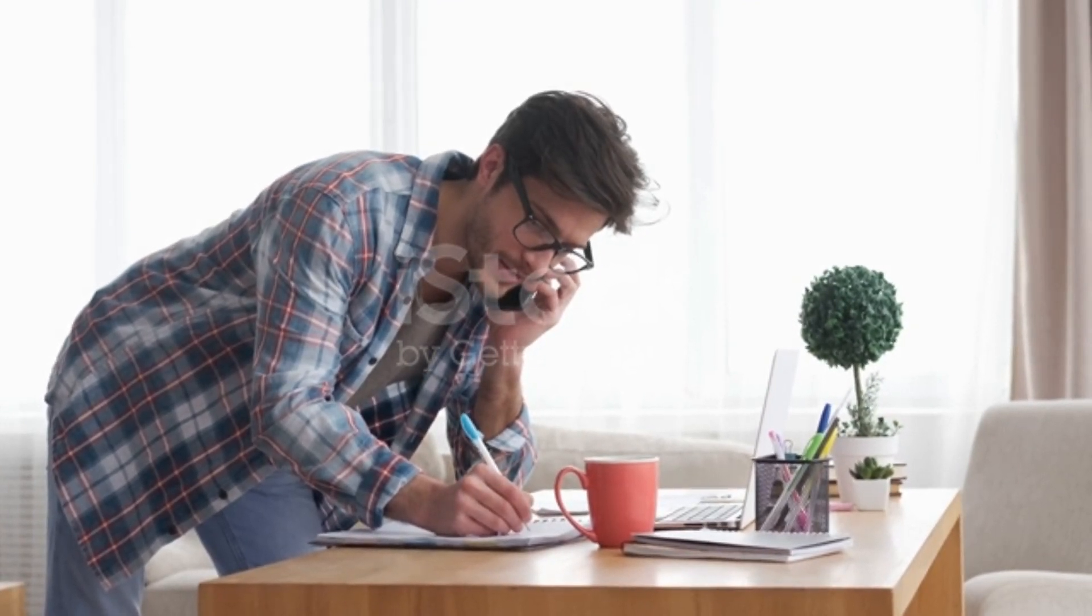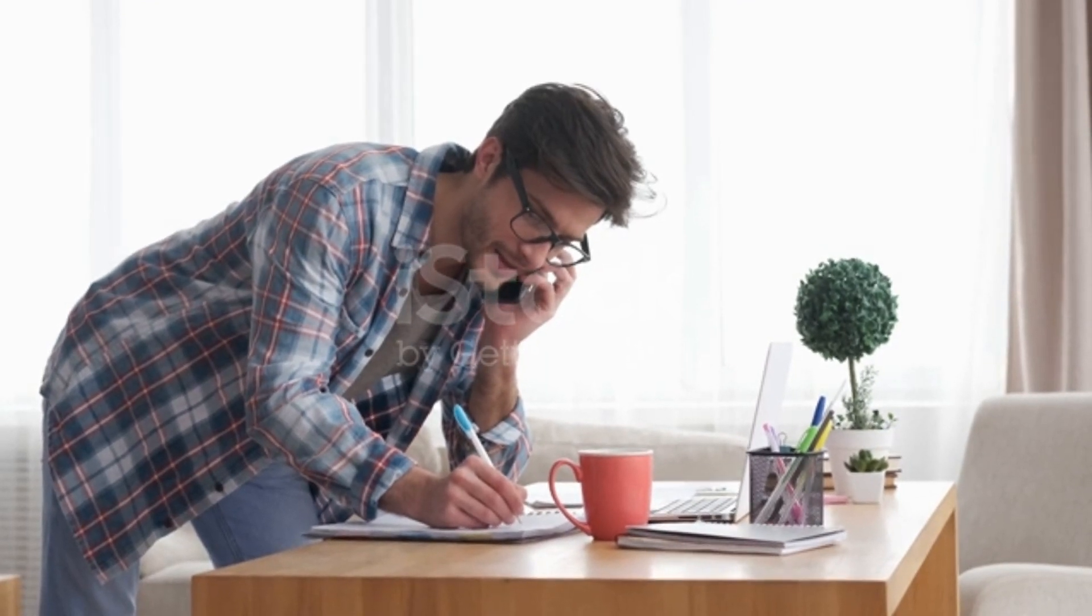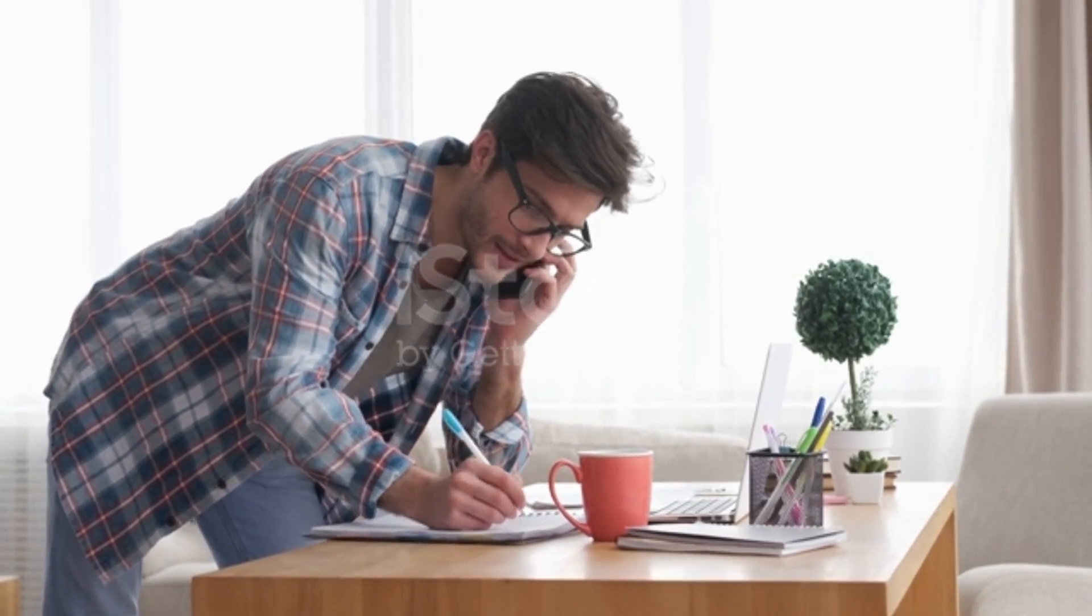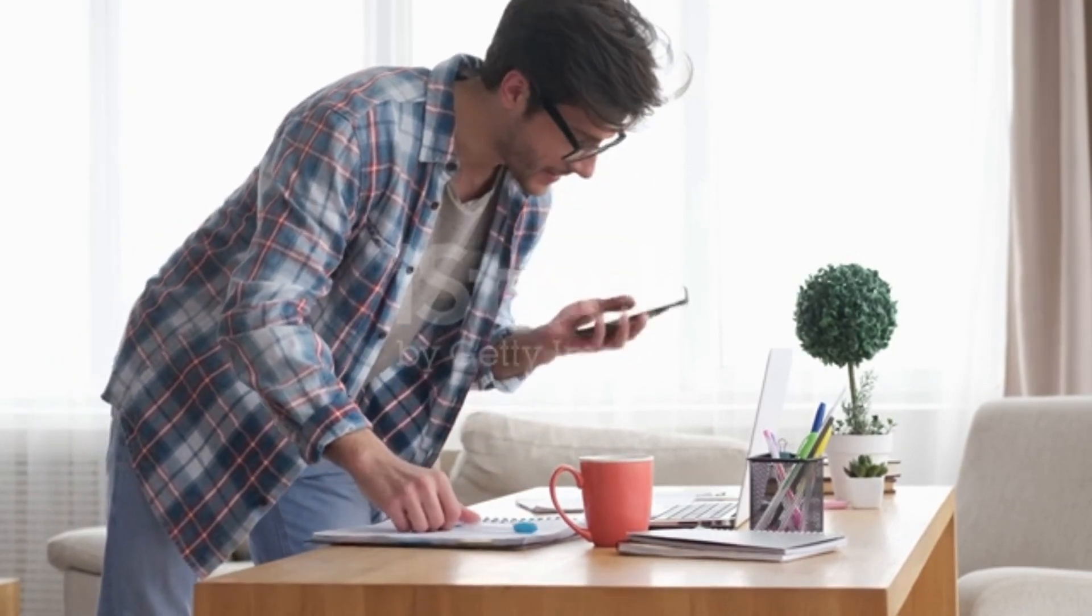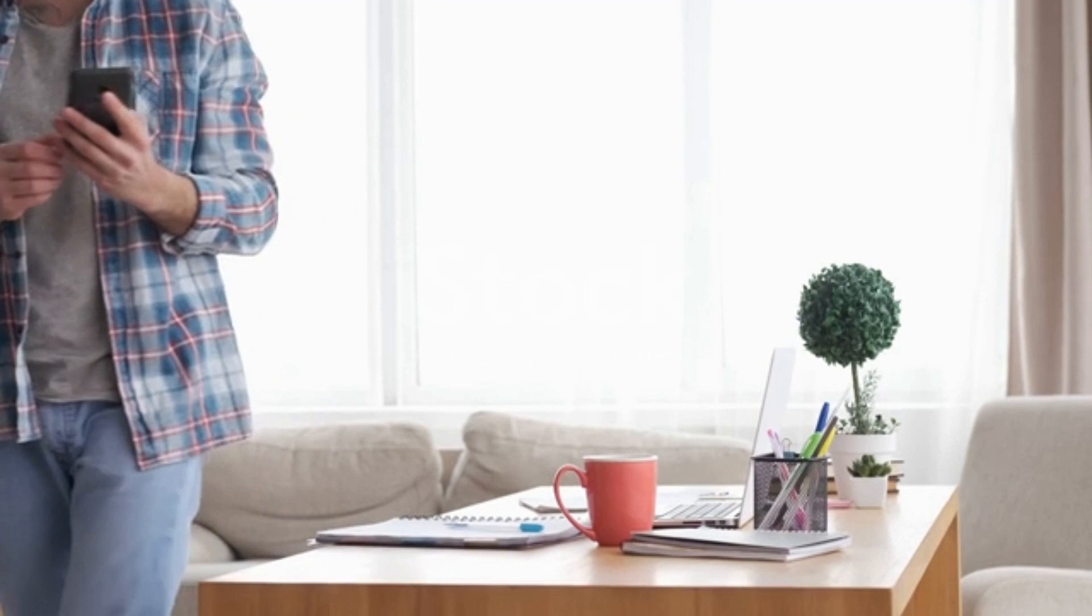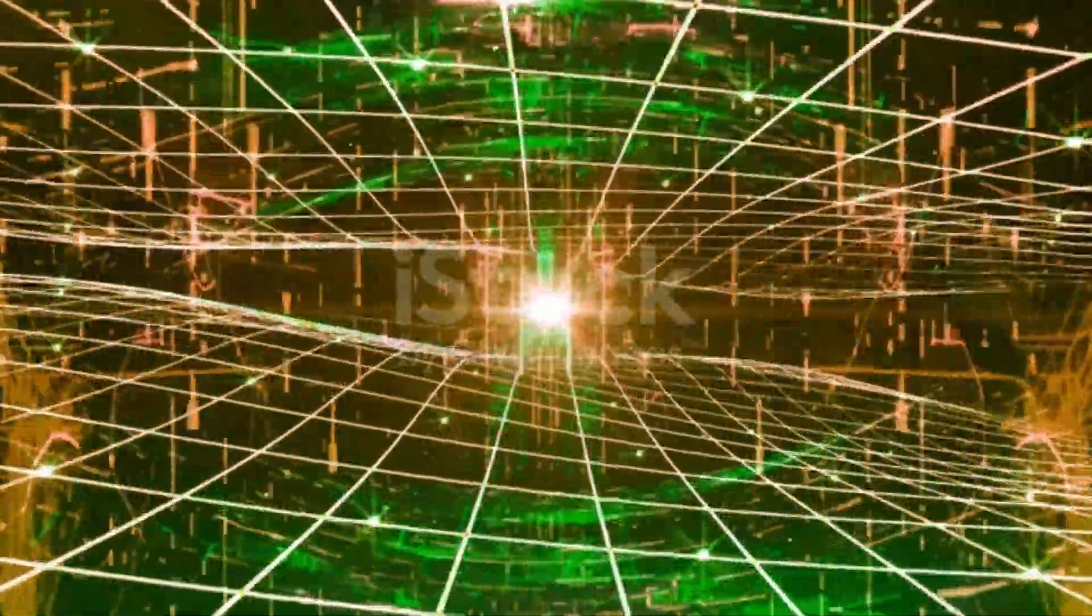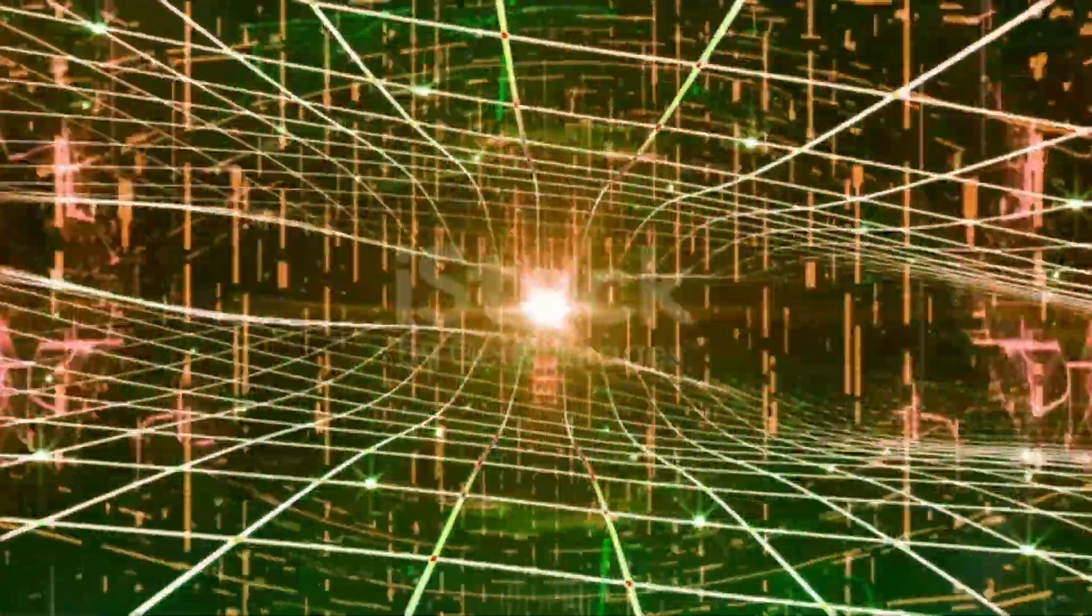If you've ever wondered what we're actually made of, you probably found yourself going down a rabbit hole of discoveries. Just like other living things, we're made of cells. And cells are made of molecules, and molecules are made of atoms. Dig even deeper, and pretty soon you'll find yourself at the level of electrons and quarks. These are the particles that have traditionally been considered the fundamental building blocks of matter.